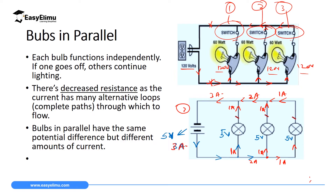So in this case, when you are arranging bulbs in parallel, to get total current you add current one plus current two plus current three. But for voltage, if you want voltage across all the bulbs, then voltage total is equal to voltage one, which is equal to voltage two, which is equal to voltage three. That is very important to note.